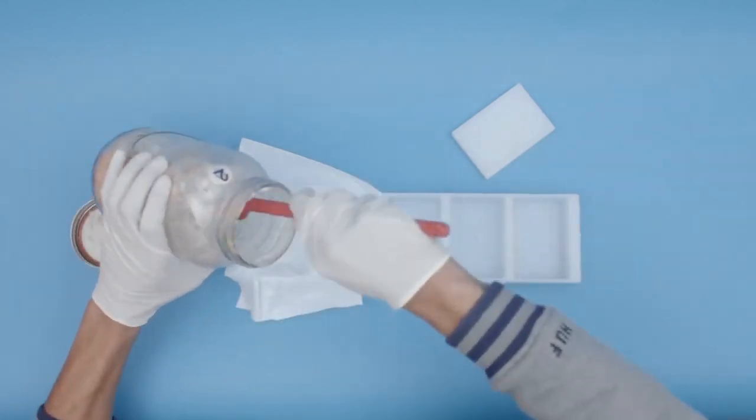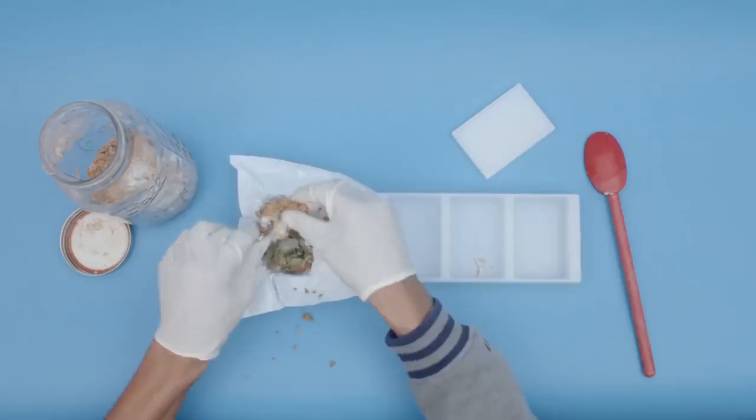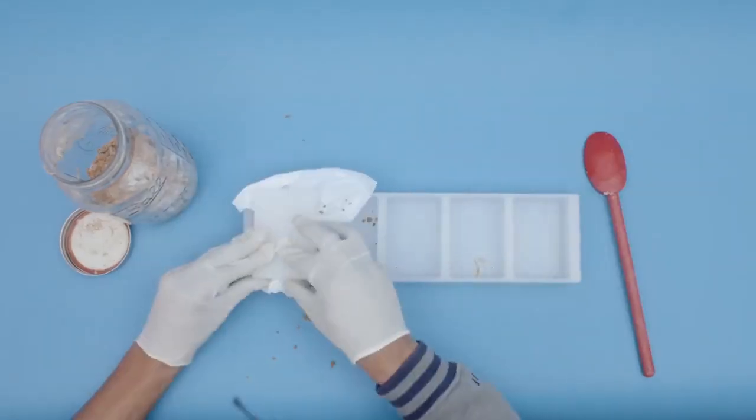Step six, remove the mushroom mass from the jar, break it up into pieces and place it into a brick mold.